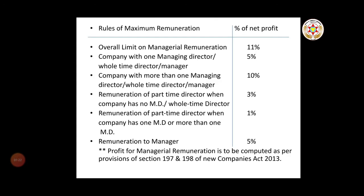Rules of maximum remuneration: the overall limit on managerial remuneration — the upper limit or maximum ceiling — is 11%. For a company with one managing director, whole time director, and manager it is 5%. Company with more than one managing director, whole time director and manager is 10%. Remuneration of part time director when company has no managing director or whole time director is 3%. Remuneration of part time director when company has one MD or more than one MD is 1%. Remuneration to manager is 5%. Profit for managerial remuneration is computed as per section 197-198 of Companies Act 2013.